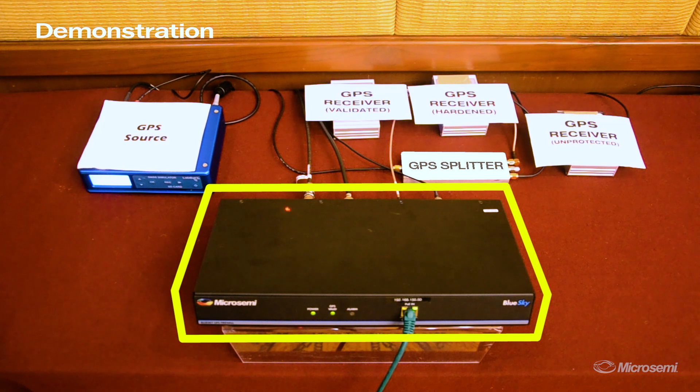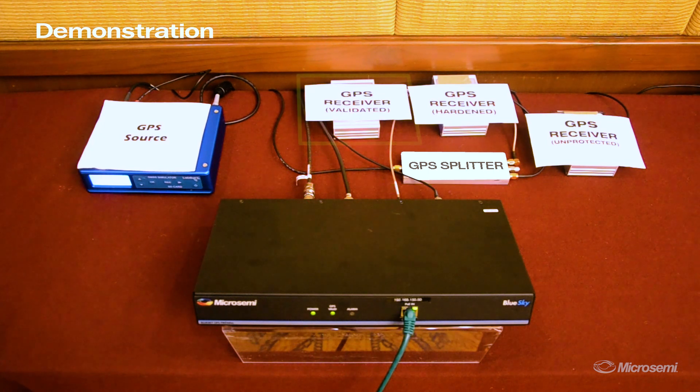Next, the validated output of the blue sky GPS firewall is connected to a second GPS receiver. In the case of the validated GPS output, when a GPS signal anomaly, such as a jamming or spoofing event, is detected, the blue sky GPS firewall will cut off that output and allow that downstream receiver to go into holdover.